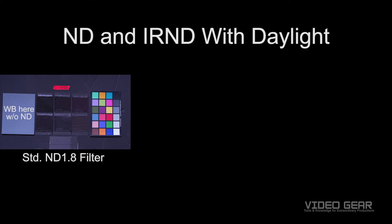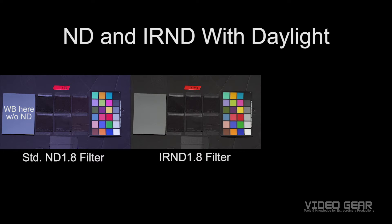In our second example, we're going to show you how the filters respond to daylight. We've white balanced to the 18% gray chart without the ND filter installed. Keeping the same white balance, we'll insert a standard ND filter. You can see that the fabric swatches show the typical magenta IR pollution. Also keeping the same white balance, we'll insert the Format Firecrest IR ND filter. We can see that the fabric swatches are back to looking black, just as they do in person.